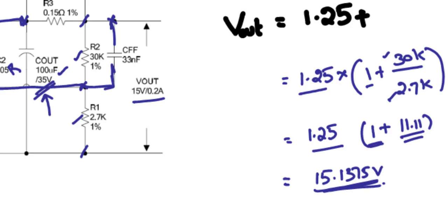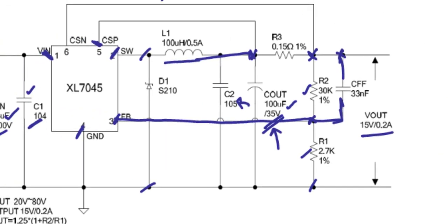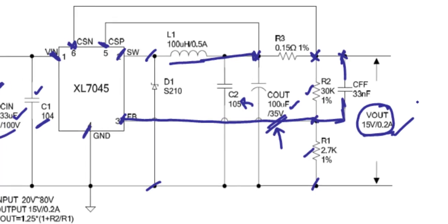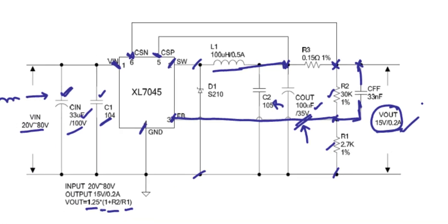CSP is the current sense positive and CSN is the current sense negative. By maintaining this circuit, you can exactly control both the output voltage and current limits as per your requirement. In the next video, I'll show how we designed our own circuit. If you want the complete PCB, we have fabricated some of these PCBs which you can purchase — details are in the description below.